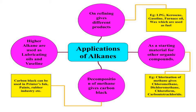Alkenes can also be used as a starting material for the preparation of other organic compounds. For example, the chlorination of methane gives us dichloromethane, chloromethane, chloroform, and carbon tetrachloride.